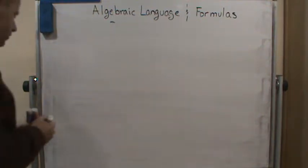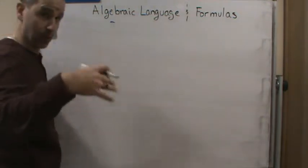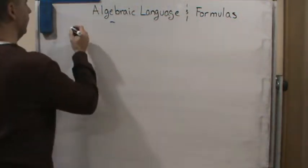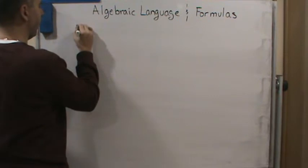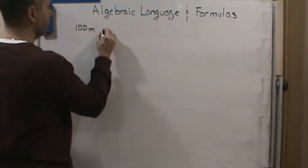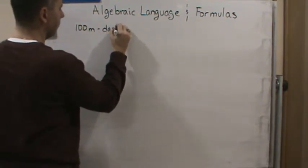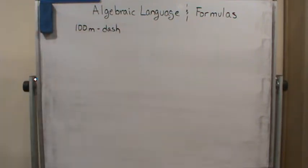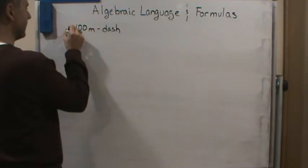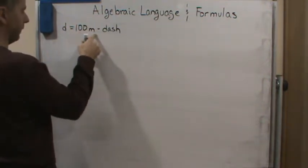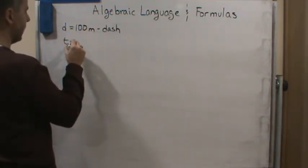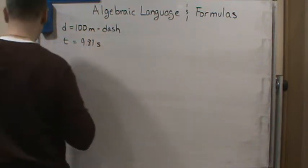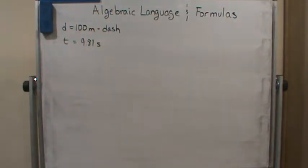Okay, 100 meter dash. Let's write this stuff down. One of the things I always do is write down the information that they're giving you. So we're talking about a 100 meter dash, right? And he won it in 9.81 seconds. So that's the distance, 100 meters. Distance and time is 9.81 seconds. Let's keep reading.